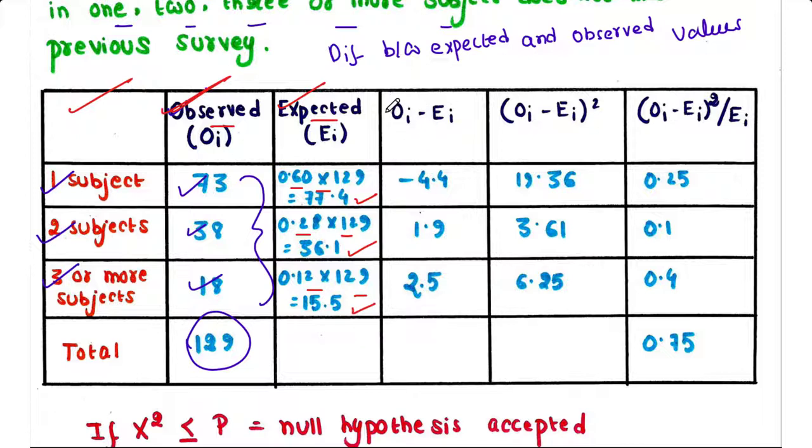Now we have to subtract expected value from the observed value for each data. So 73 minus 77.4 equals minus 4.4. 38 minus 36.1 equals 1.9. 18 minus 15.5 equals 2.5.